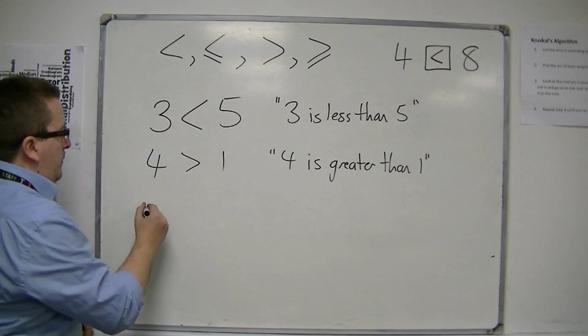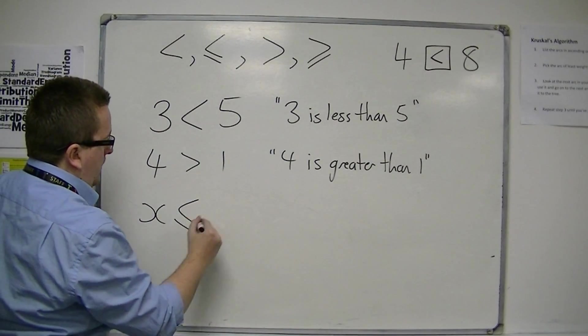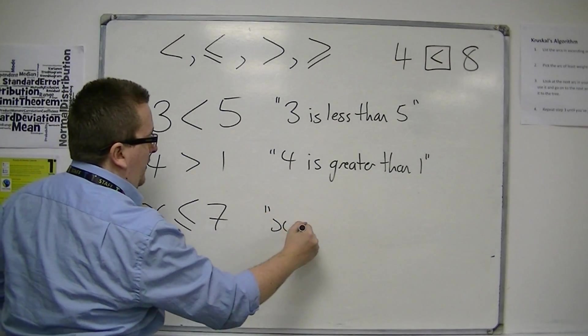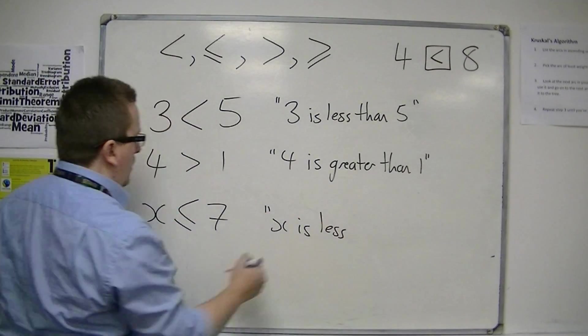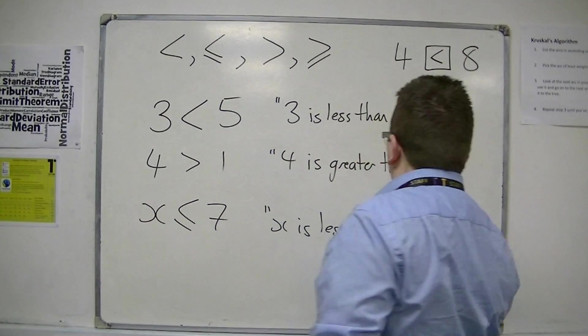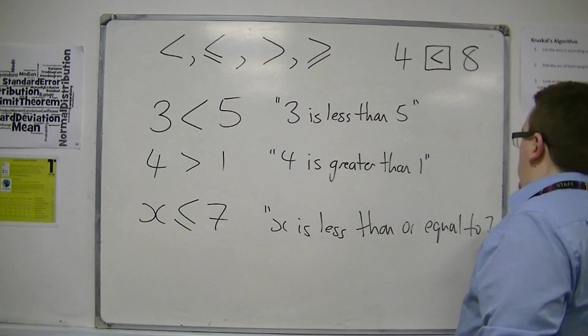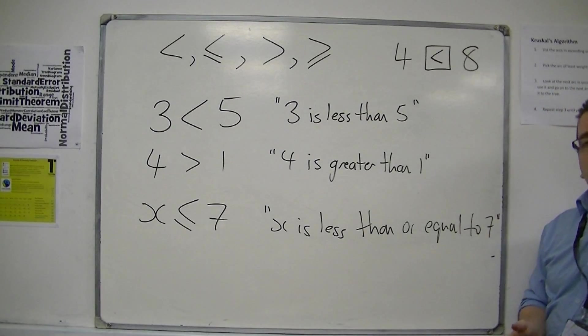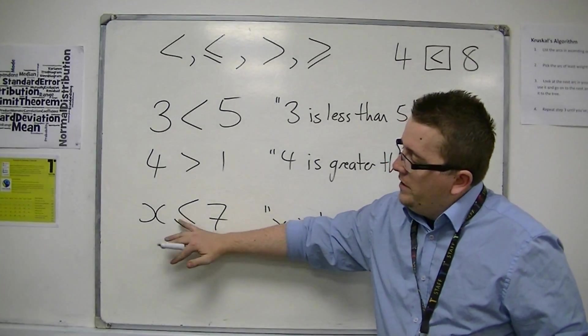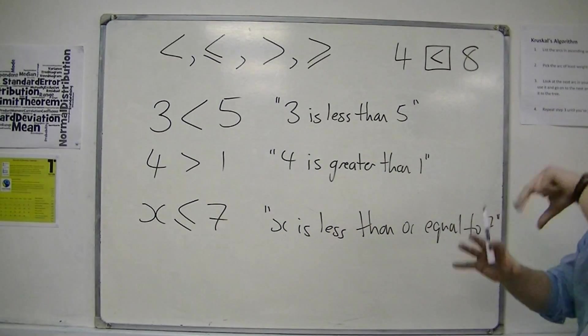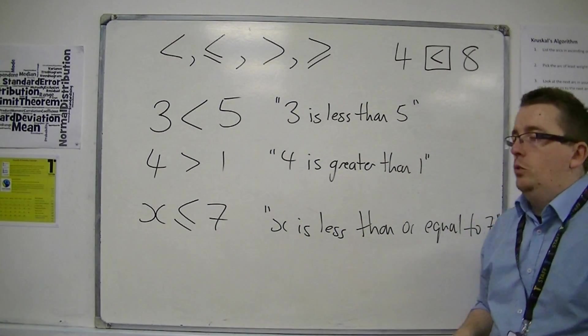You could also get something like this, and what that means is that x is less than or equal to seven. So you can put this kind of equal sign underneath, and that means it could be less than or equal to it.